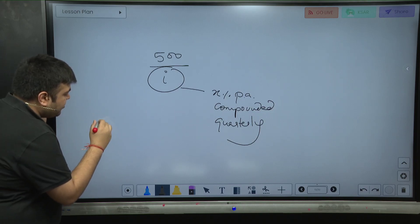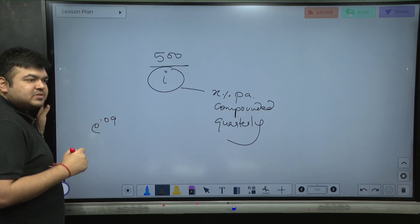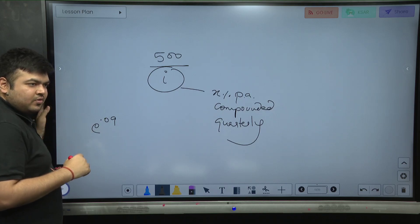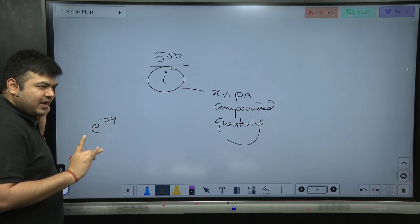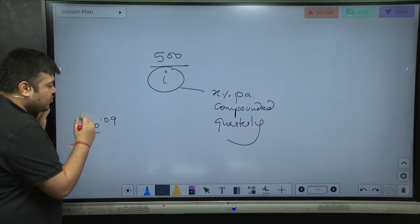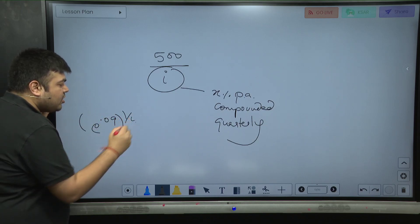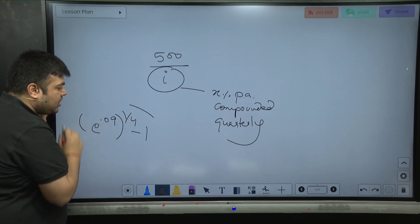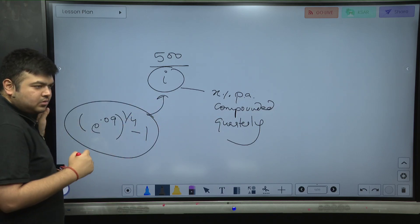Now e to the power 0.09, one becomes this much in one year. This is your EAY. EAY, say quarterly rate - one becomes 0.09 in one year, so in one quarter, this much.